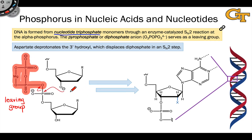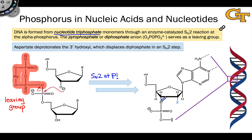In the presence of a good nucleophile, such as this anionic oxygen — which is generated in the active site of this DNA-forming enzyme by an aspartate residue — this can undergo an SN2 reaction at phosphorus, resulting in the formation of the key oxygen-phosphorus bond.